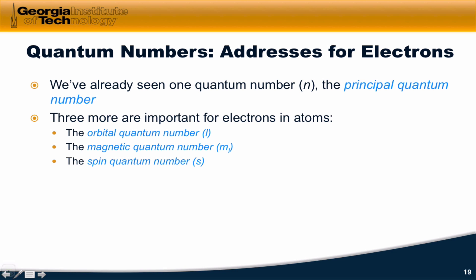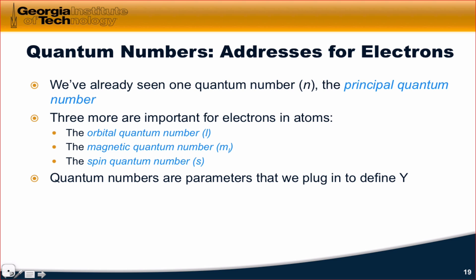There are three more that are important for electrons in atoms. There's the orbital quantum number l, the magnetic quantum number m sub l, and the spin quantum number s or m sub s. And the quantum numbers are the parameters that we plug in to define,